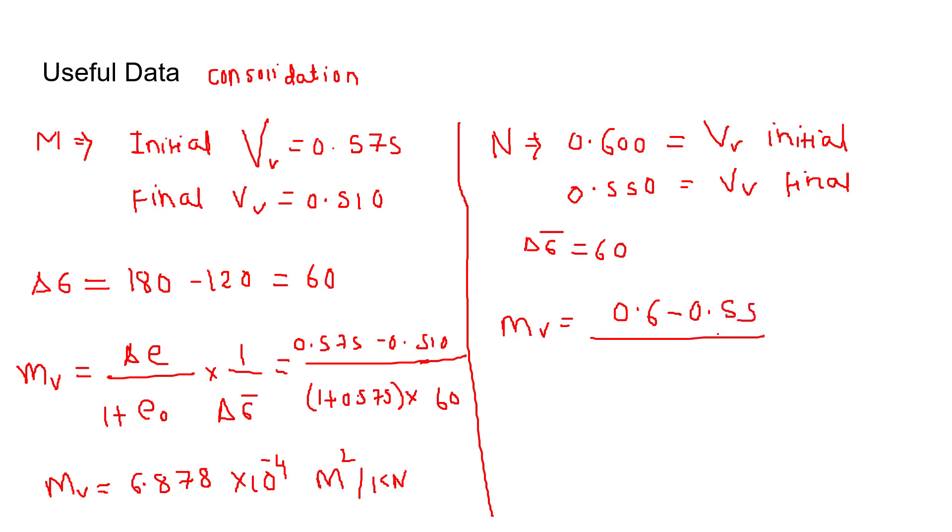upon (1 plus 0.6) into 1 upon 60. It will come out to be 5.208 × 10⁻⁴ meter square per kilonewton.